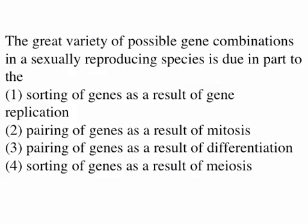Let's look at some meiosis Regents questions. The great variety of possible gene combinations in a sexually reproducing species is due in part to the: (1) sorting of genes as a result of gene replication, (2) pairing of genes as a result of mitosis, (3) pairing of genes as a result of differentiation, or (4) sorting of genes as a result of meiosis. The answer is four — genes are sorted, which is what meiosis is all about.